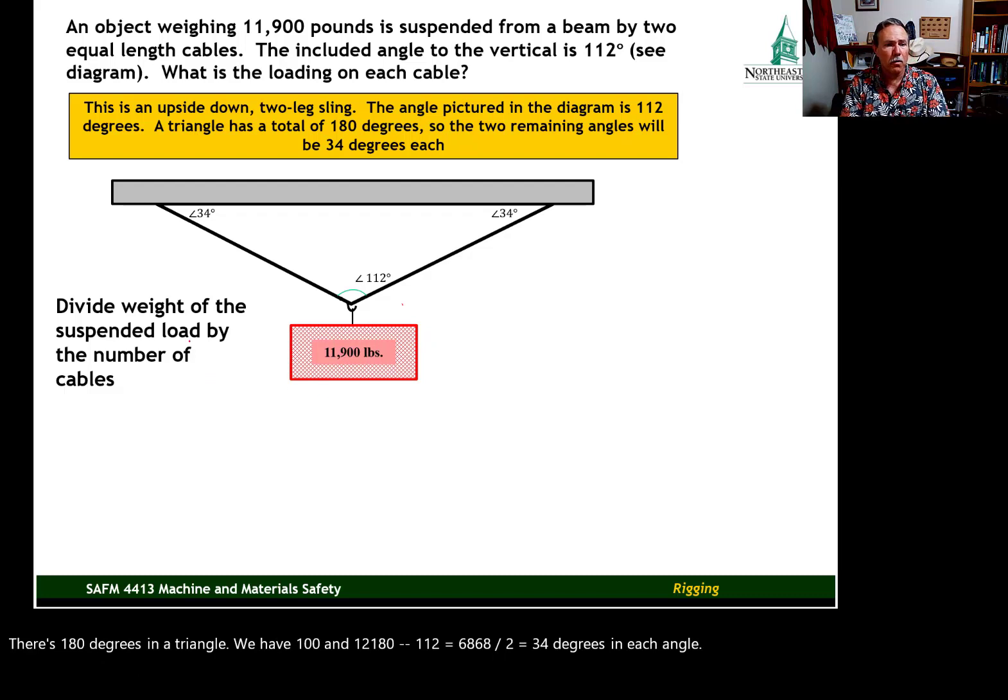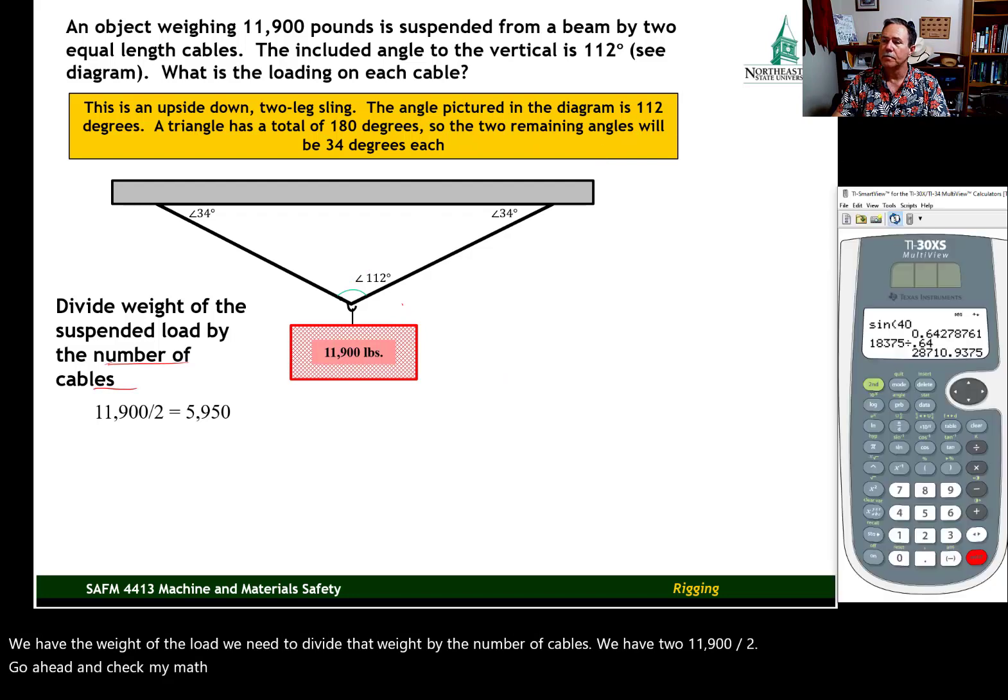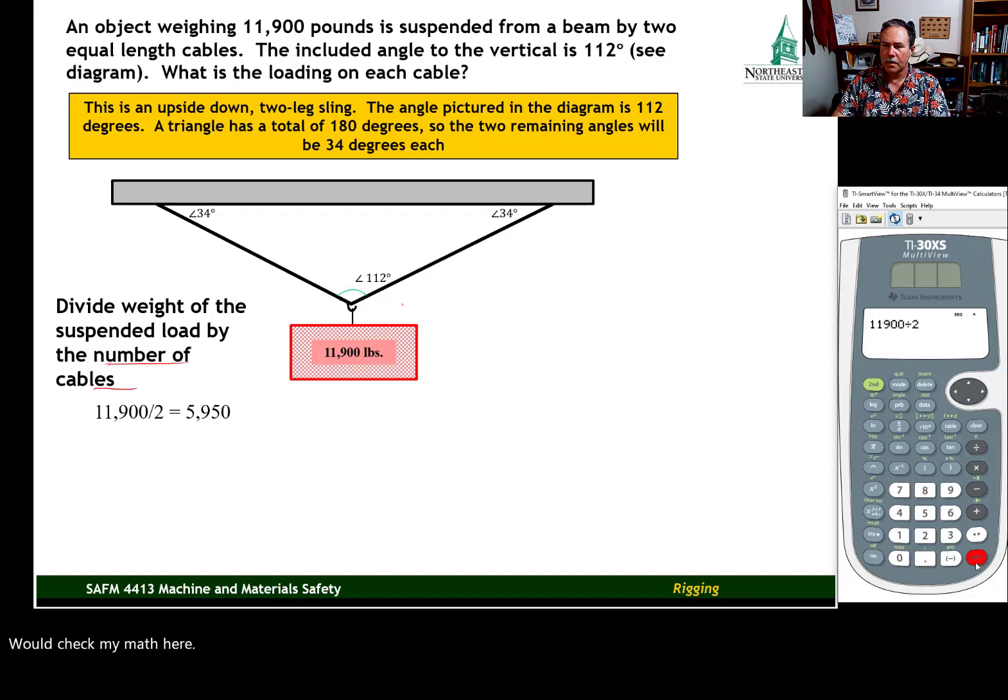We have the weight of the load. We need to divide that weight by the number of cables. We have 2. 11,900 divided by 2. Go ahead and check my math here. 5,950. That's the number we're starting with for calculating our sling loading.